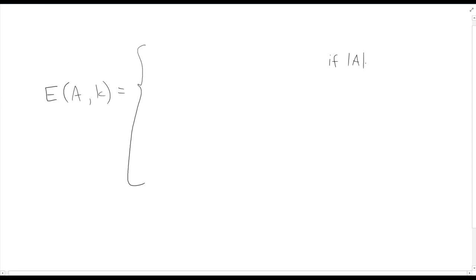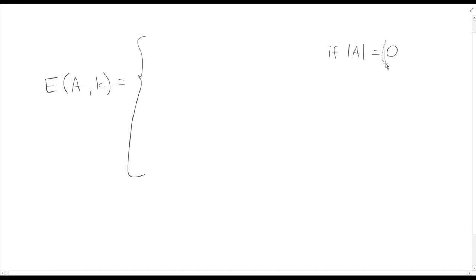What are some easy cases for the size of A? The select problem isn't well-defined on an empty list since we want there to be an element of the specified rank. So the first good base case is if the size of the list is 1. In that case, k must be 1, so we're selecting the minimum and maximum — they're the same. We simply return that single element, as it has to be the element you're asking for.